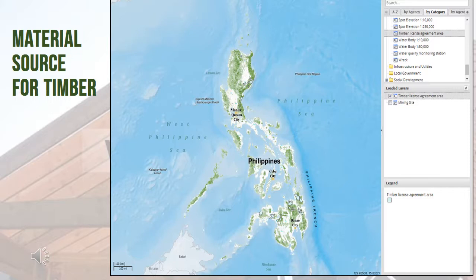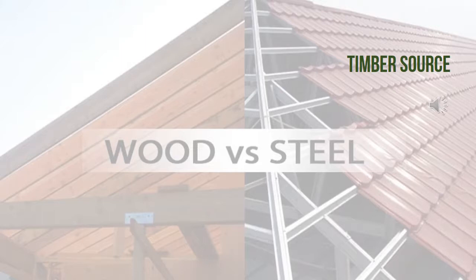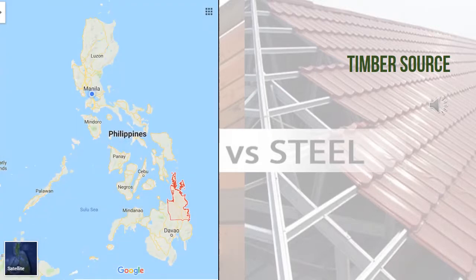A source from the National Mapping and Resource Information Authority showed the timber license agreement areas in the Philippines. Only a small portion of the country is licensed for timber production. In Mindanao, Regions 9, 10, and 13 are the only approved zones for timber making. The timber used for Case Study 1 was assumed to be extracted from the timber corridor of the Philippines, the Caraga Region. Sawmills were identified in the same area, where the timber was processed and ready for delivery to Marawi City, Lanao del Norte. Based on the online open-source database, the shortest travel time from extraction to the actual site area is around 7 hours and 21 minutes.